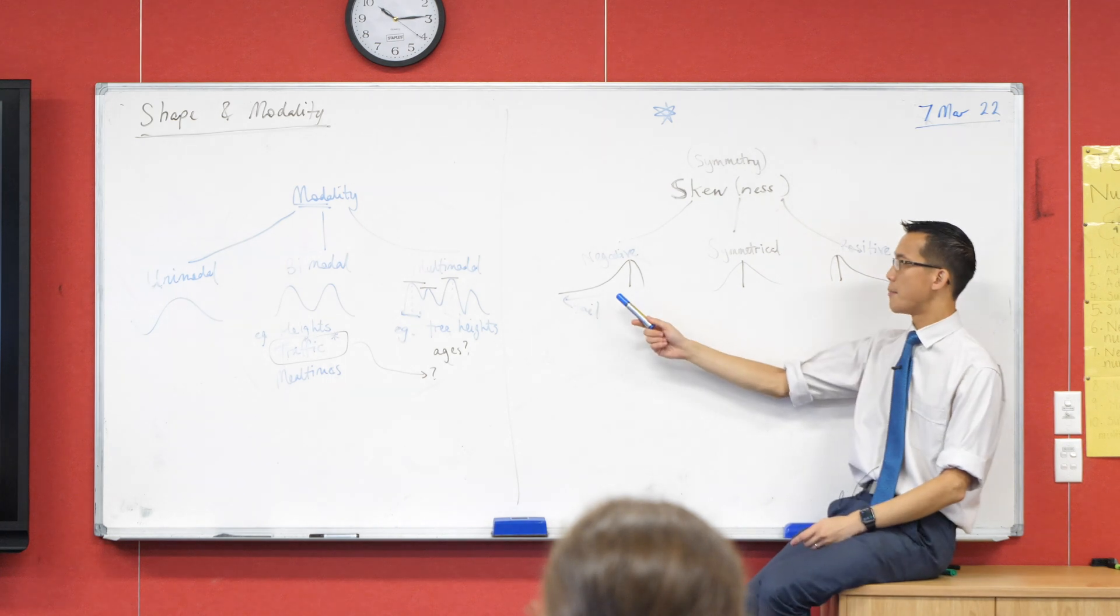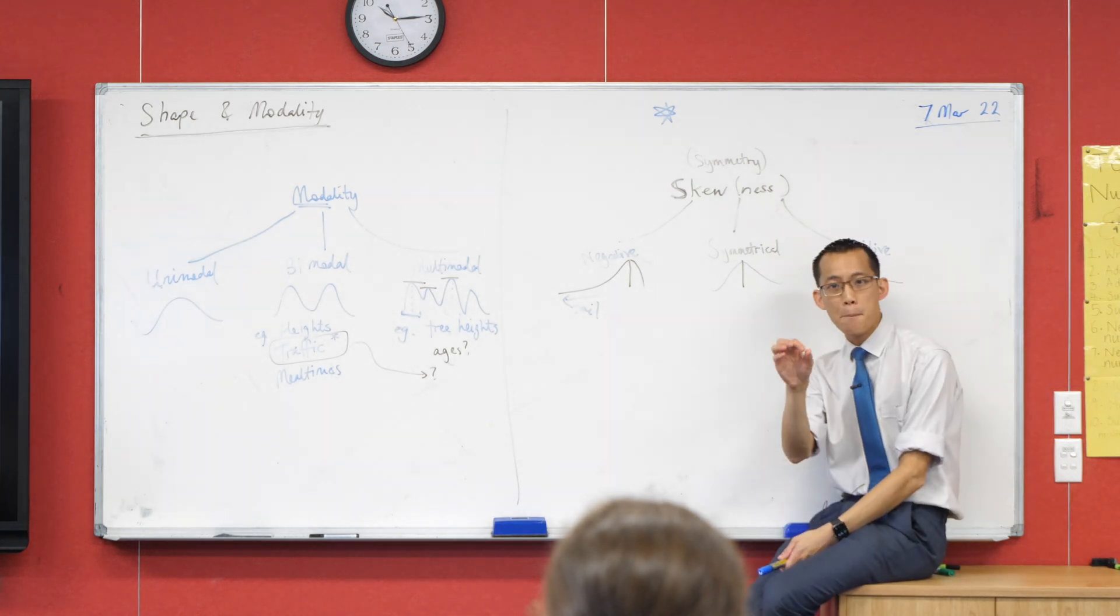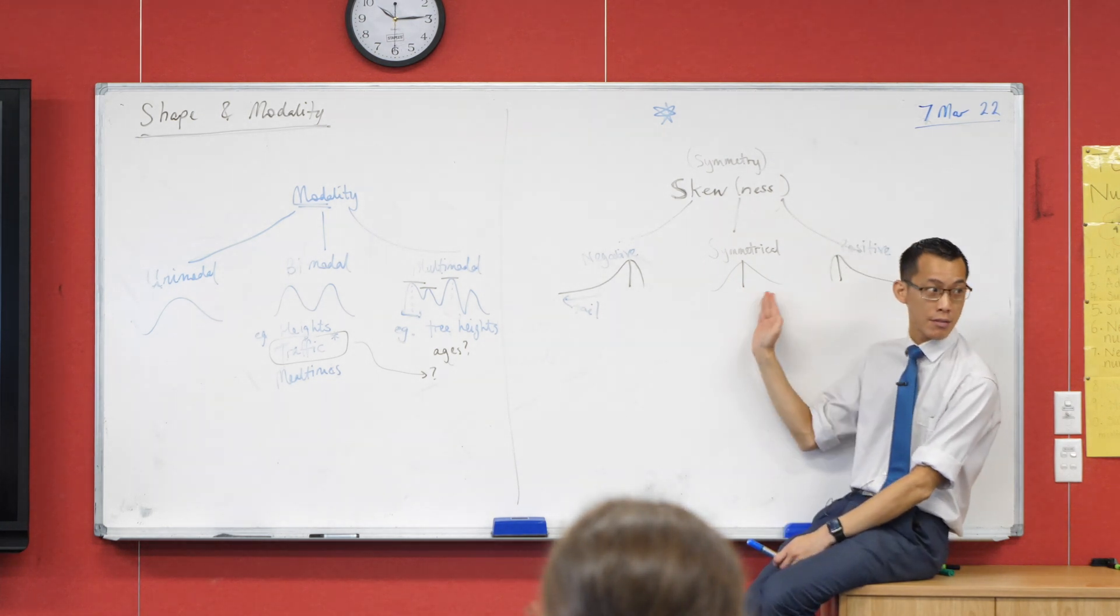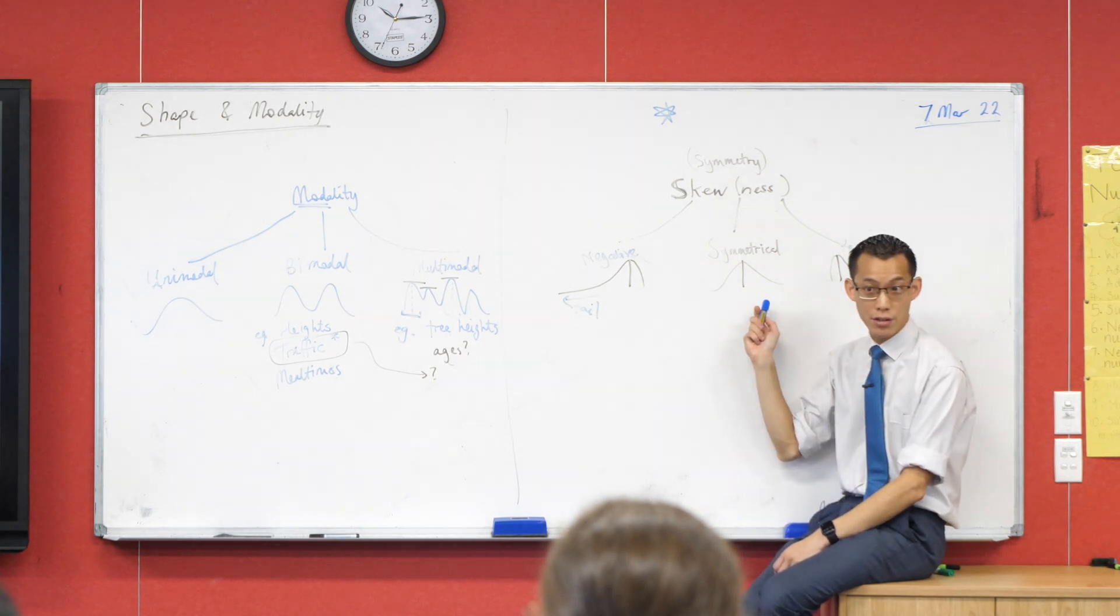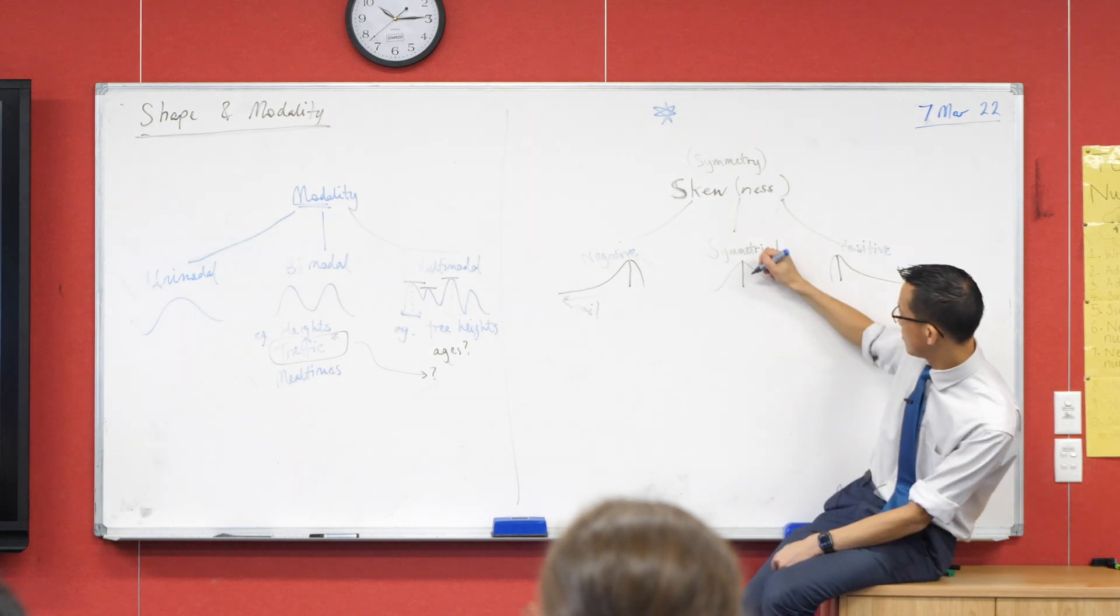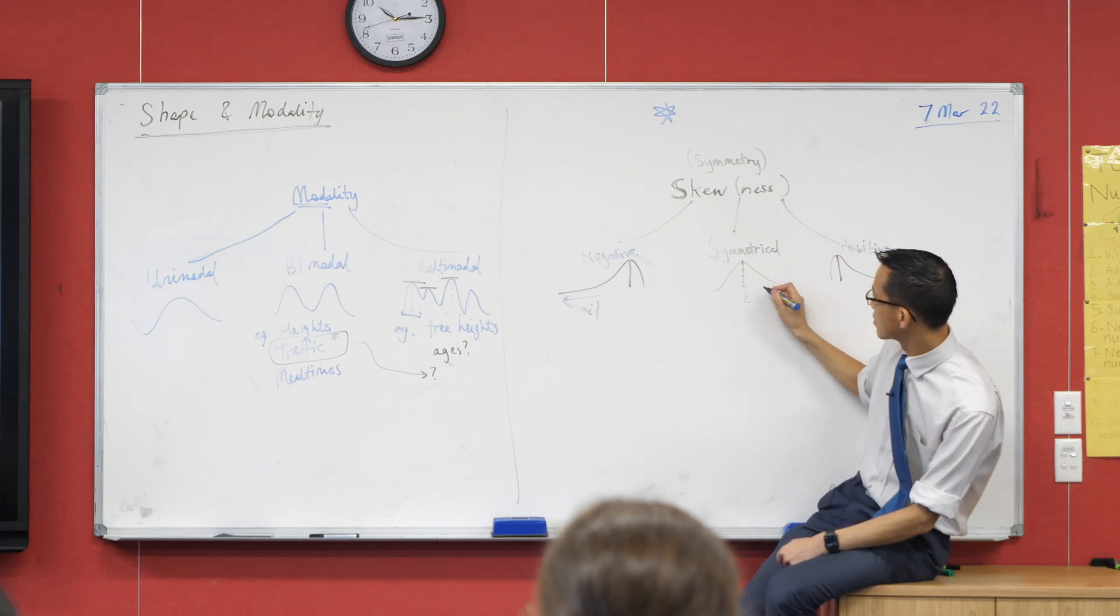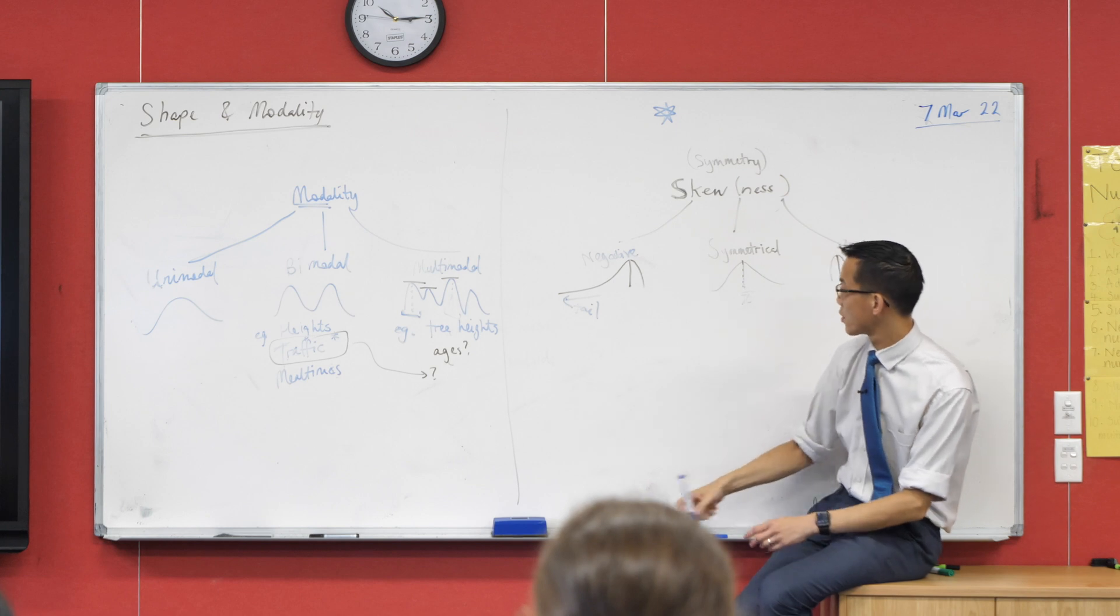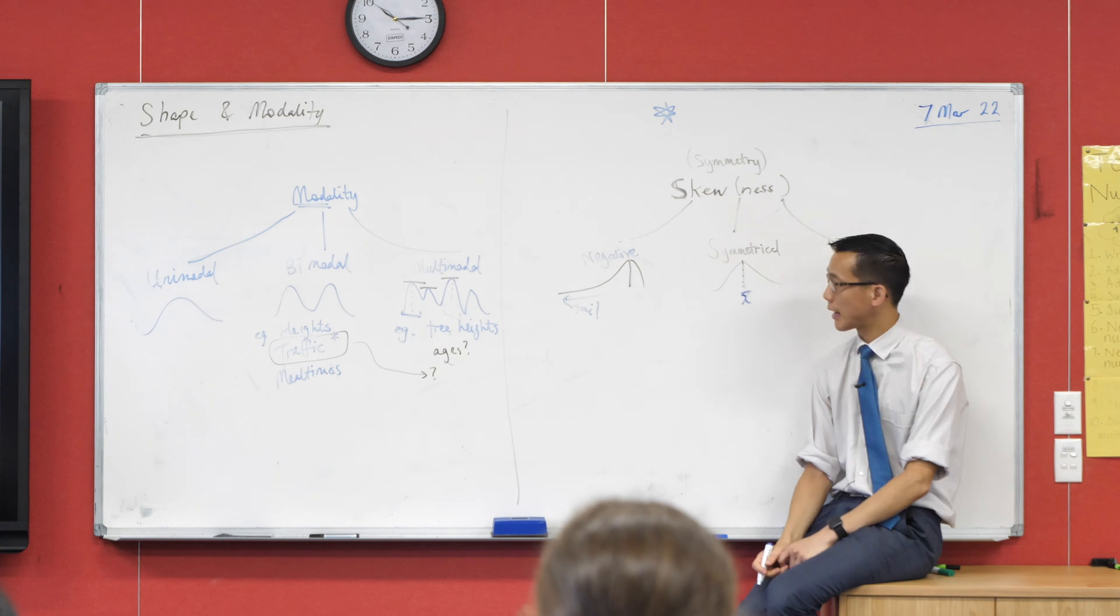Now I want you to have a think about each of these. All three of them, in fact. Where would the mean, the average, be in relation to each of these three data sets? We'll do the easiest one first. When you've got a symmetrical data set, the mode and the mean, they're roughly equal. So I'm going to put X bar, I will never forget my pencil case again because I'm so irritated. X bar, I'm going to put right there on top of the mode.